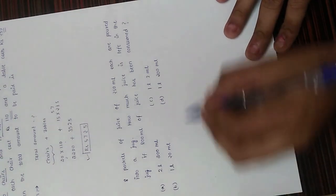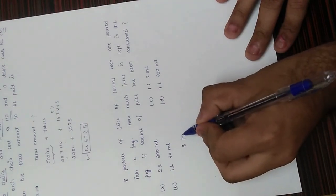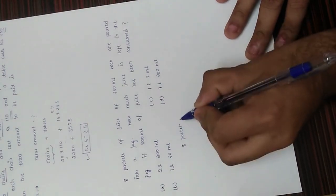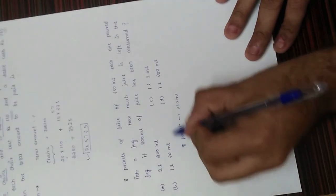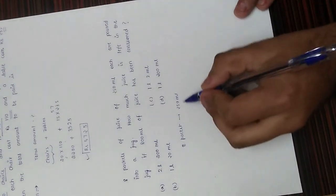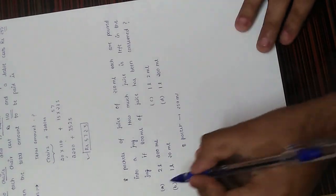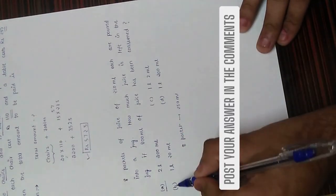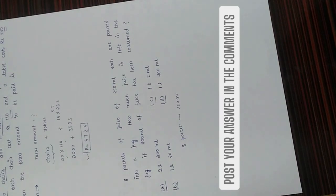So we have 8 packets of juice, each 250 ml, all poured into a jug giving some total quantity. Then some is consumed and we find what remains. Post your answer in the comments and I will give you the detailed solution tomorrow. Thank you, bye!